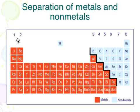You'll notice that there's this little black line right here on your periodic table. This is called the stair step. Everything to the left — the orange here — all these are metals.